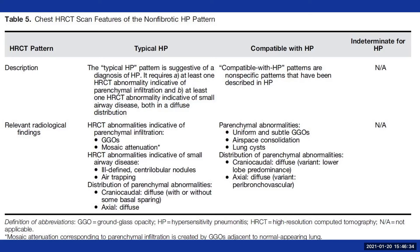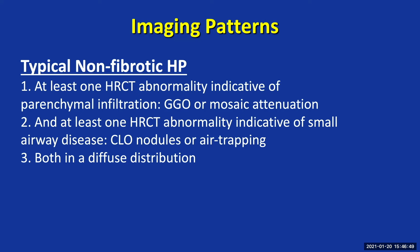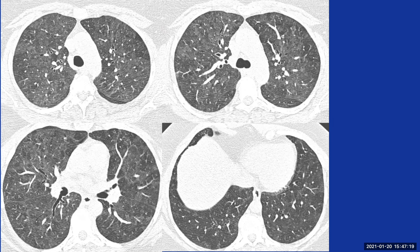This is the table with the different diagnostic levels of confidence for hypersensitivity pneumonitis on imaging — it's in the guidelines, and I encourage you to read it. For a high-confidence typical non-fibrotic HP pattern, you have to have at least one HRCT abnormality suggesting parenchymal infiltration — ground glass opacity or mosaic attenuation from lobular inflammation — and at least one HRCT abnormality suggesting small airway disease, whether centrilobular nodularity or air trapping. All these abnormalities must be present in a diffuse distribution.